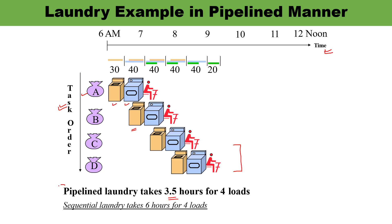So this is the concept of pipelining — some of the tasks are handled in parallel. Originally the task which was performed in six hours can now be done in 3.5 hours. From this example, it must be clear what the concept of pipelining is, and it is going to reduce the time involved in performing any particular task. This example gives you an understanding of what happens in a non-pipeline manner versus pipelining.